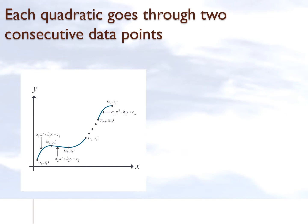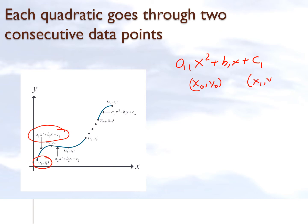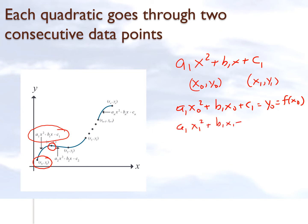The first thing to recognize is that each quadratic goes through two consecutive data points. For the first quadratic, a₁x² + b₁x + c₁, it goes through x₀, y₀ and x₁, y₁. That means a₁x₀² + b₁x₀ + c₁ = y₀, and a₁x₁² + b₁x₁ + c₁ = y₁. So we are setting up two equations for each quadratic that goes through two consecutive data points.